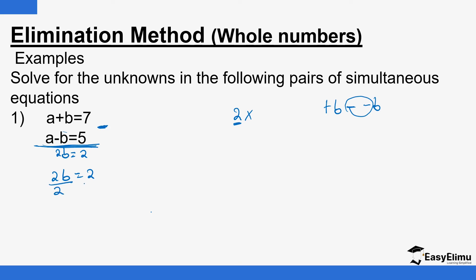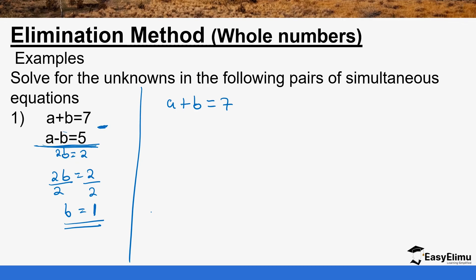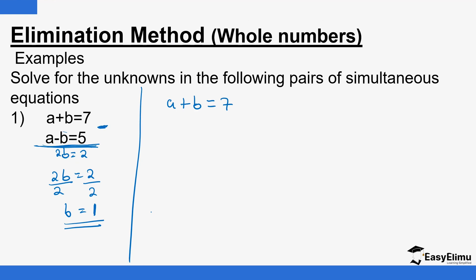We continue just as in the previous example: divide both sides by 2, and you have b equals 1. Now that b is 1, you can find the value of a. You pick one of the equations — either of them. This is called back substitution: you pick the value of one variable you've obtained and substitute it into one of the equations.